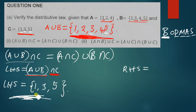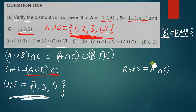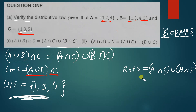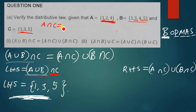We have managed to find the left hand side. Let us see if the right hand side gives the same answer, because the question is asking us to verify. The right hand side is A intersection C union B intersection C. Let us first find A intersection C — we simply look for the common elements between A and C.